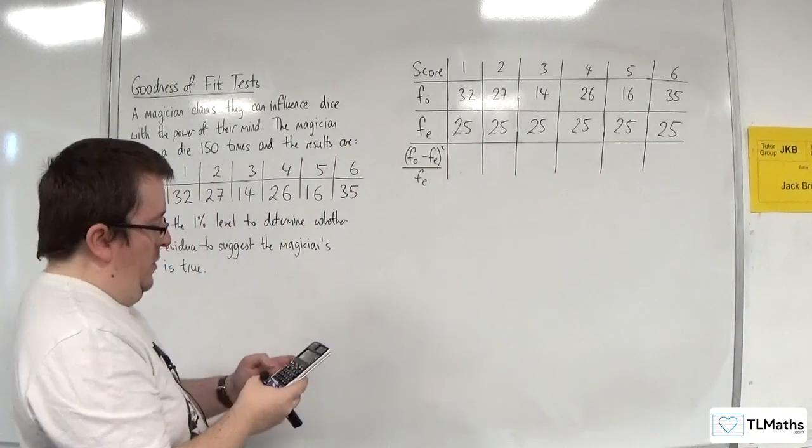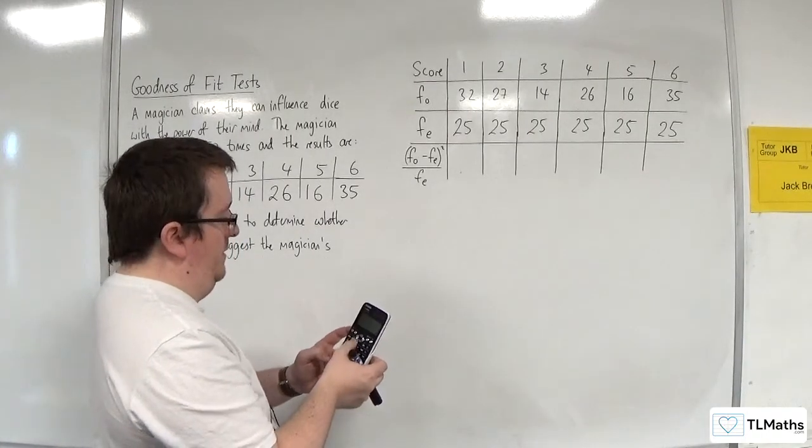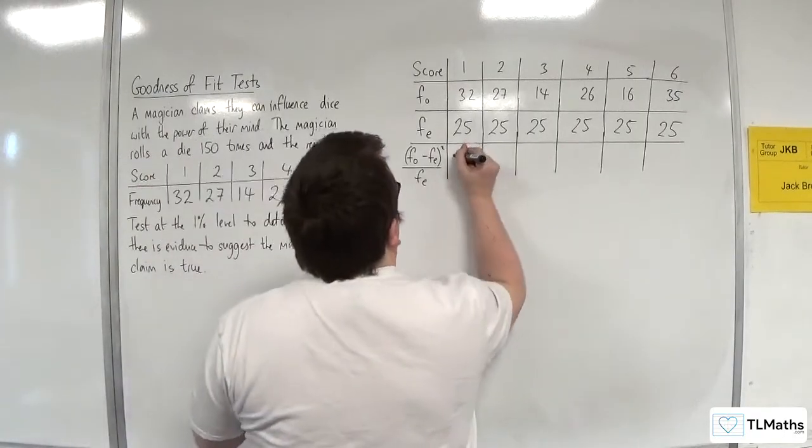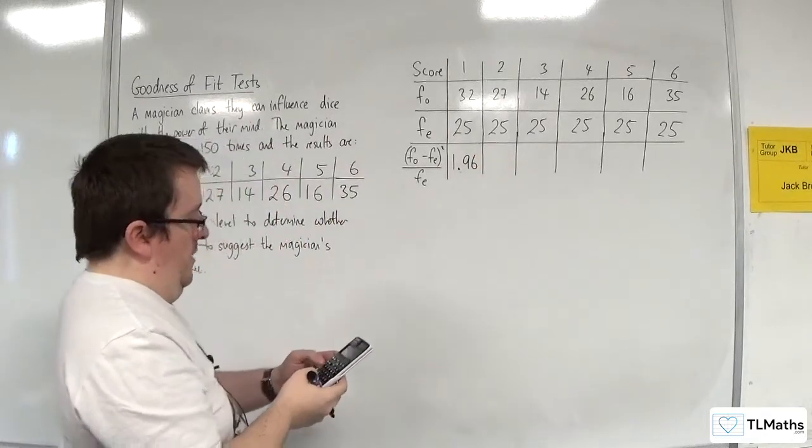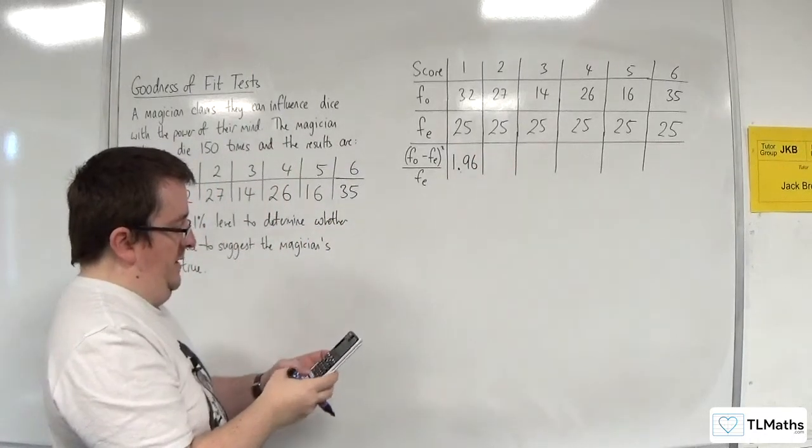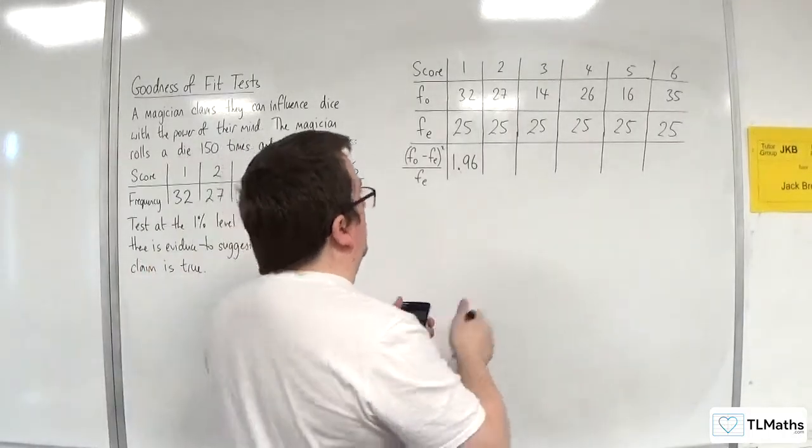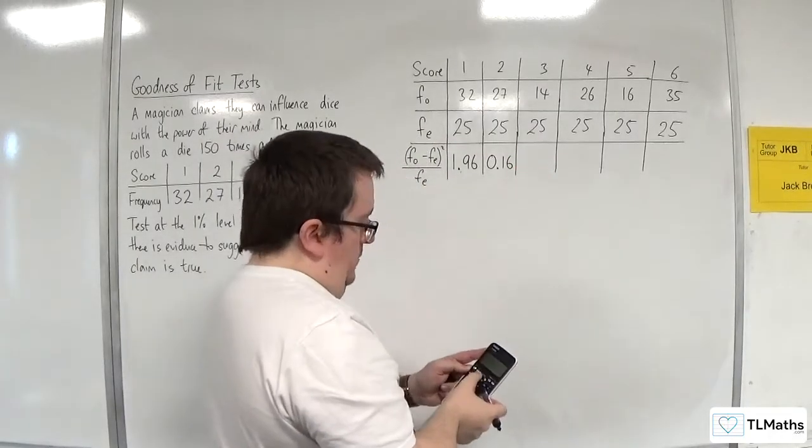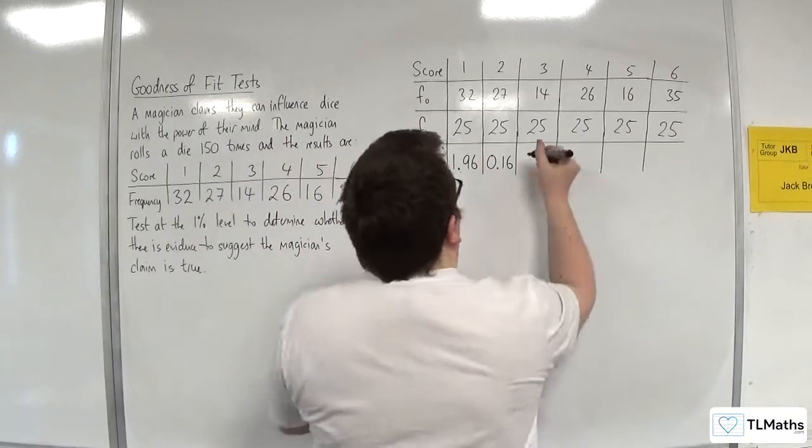Okay. So, we've got, so the first one, we've got 32, take away 25, squared, divided by 25. So, 1.96. Right, then we've got 27, take away 25, squared, divided by 25. 0.16. All right, let's change it to 14. 4.84.